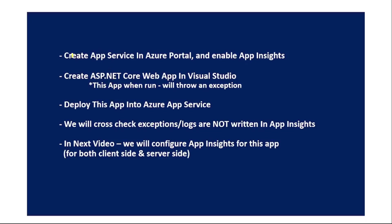In this video we will create an App Service in Azure portal and enable App Insights for it. Then we will create an ASP.NET Core web app in Visual Studio that throws an exception when run. We will deploy this app into Azure App Service and show that exceptions or logs are not written in App Insights — even though App Insights is configured. Those additional custom changes will be covered in our next video.